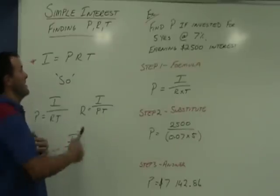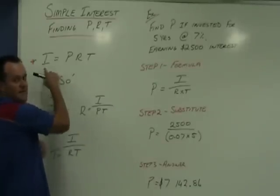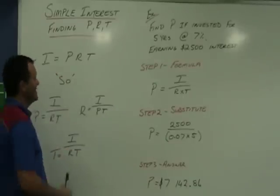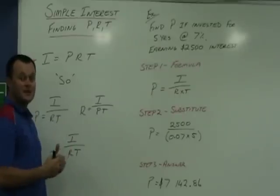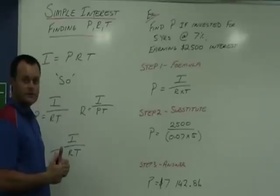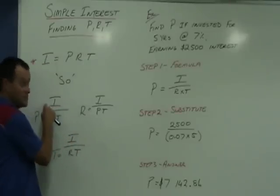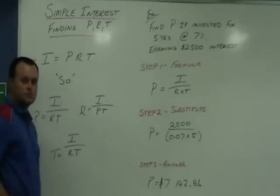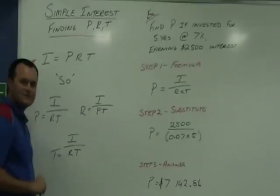So if these three things multiply to give this one, then it makes perfect sense that if we wanted to find any of those, we would need to do a division sum, because the opposite of multiply is to divide. So, it makes sense that the interest would be divided by the other two multiplied together. We end up with three very simple formulas.